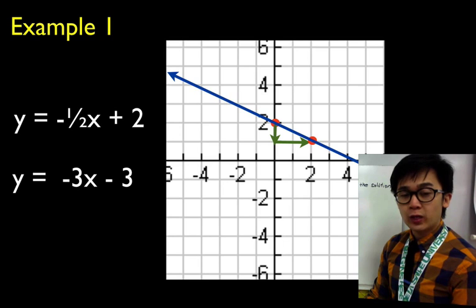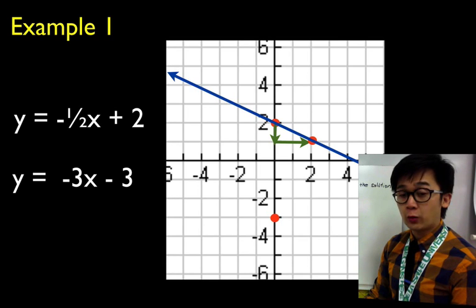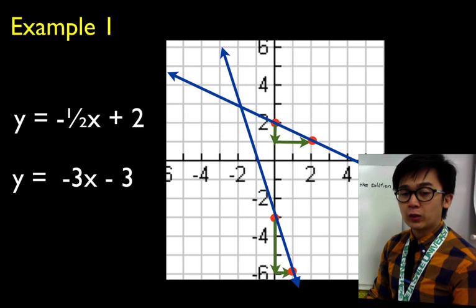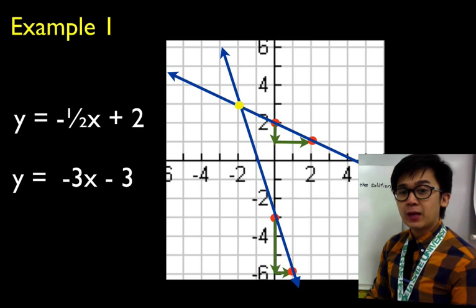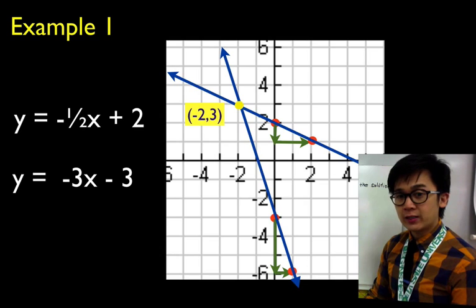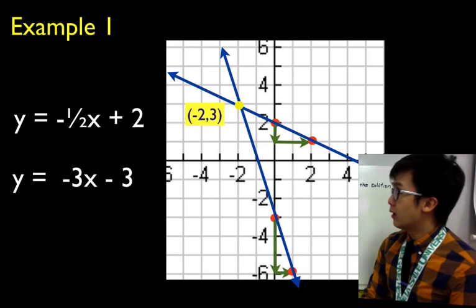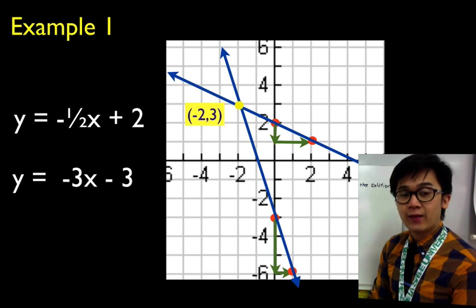For the second linear equation, we start at negative 3, which is the y-intercept. Since the slope is negative 3, we move three units down and one unit to the right to get the second point. Connecting those two points creates line 2. The point of intersection of line 1 and line 2 is the solution of our linear system, which is at negative 2 and 3.